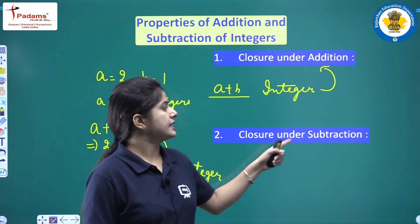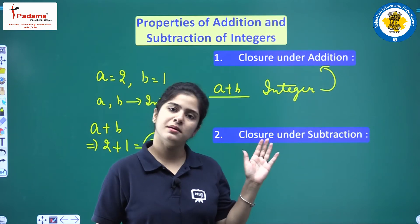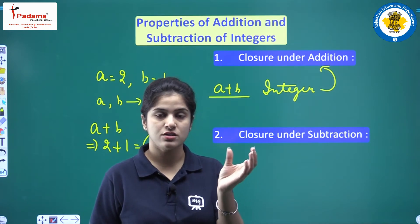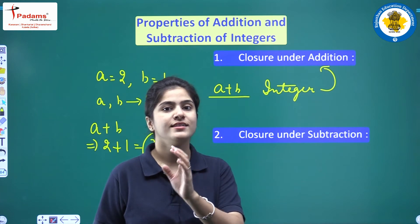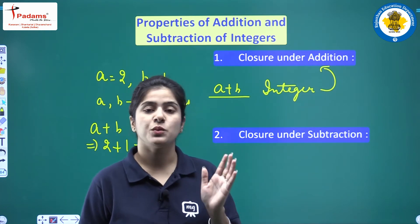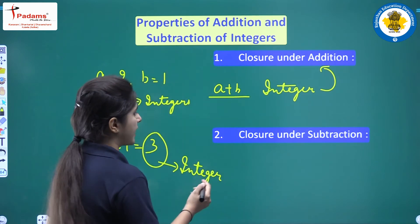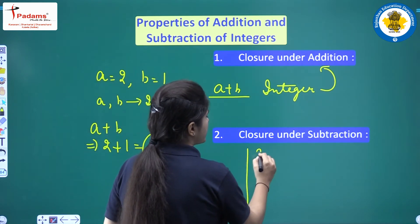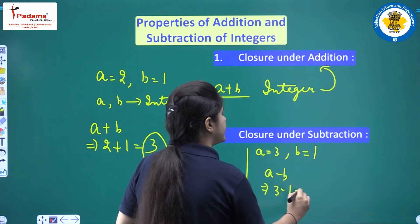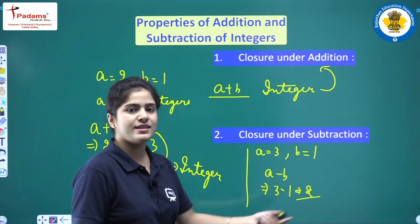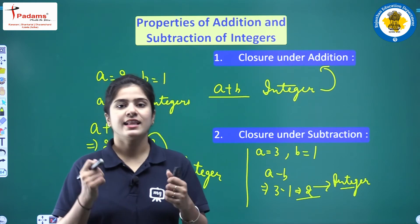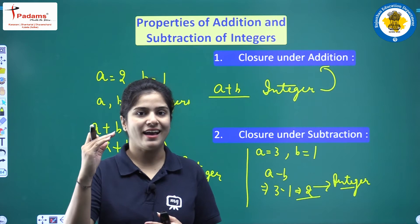Next property: closure under subtraction. Similarly, if you are subtracting any two integers and the answer of the subtraction is also an integer, this property is called closure under subtraction. For example, if A equals 3 and B equals 1, then A minus B equals 3 minus 1, which is 2. 2 is also an integer. So integers are closed under both addition and subtraction.